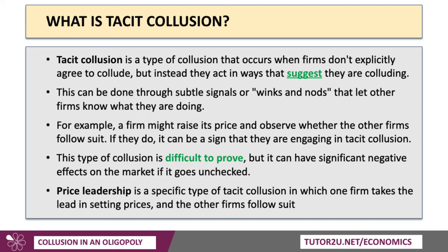Tacit collusion is any type of collusion where firms don't explicitly agree to collude, but they act in ways that hint or suggest they're colluding — the wink and the nod. One example is a firm raising their price and other firms deciding to follow suit; they may be engaging in tacit collusion. That's really hard to prove but can clearly have negative effects on consumer welfare. Price leadership is a specific type of tacit collusion where one firm takes a lead in setting prices and the other firms typically follow suit.